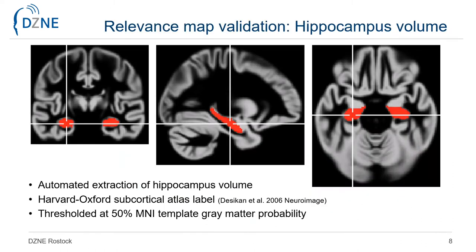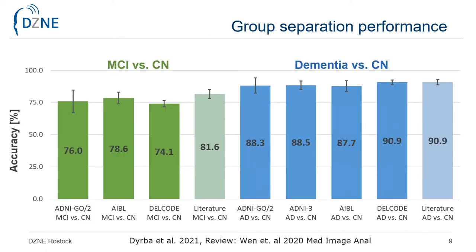For the validation of information provided by the relevance maps, we compared hippocampus relevance scores with hippocampus volume as the radiological reference standard. We selected the hippocampus region from an anatomical atlas and further applied a threshold of at least 50% gray matter probability to be more specific than the original atlas labels.